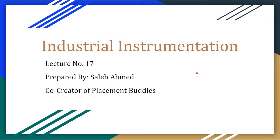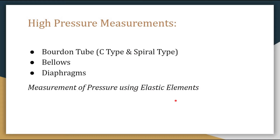Hello everyone, welcome back to Placement Buddies. Today we are going to discuss high pressure measurement devices. To measure high pressure, we can use three types of instruments: Bourdon tube, which is classified into C-type and spiral type; bellows; and diaphragms. Measurement of high pressure is also called measurement of pressure using elastic elements, as all three elements are elastic.